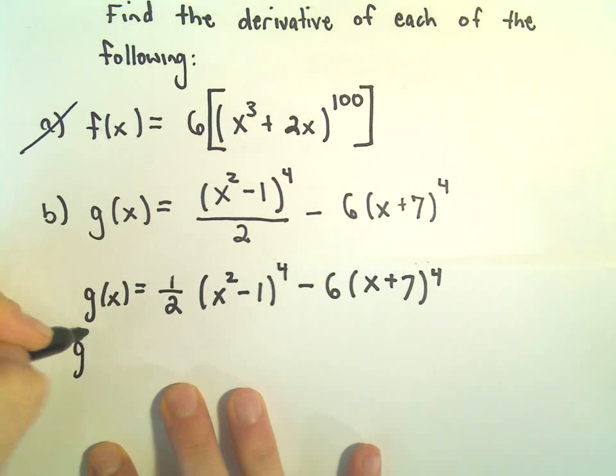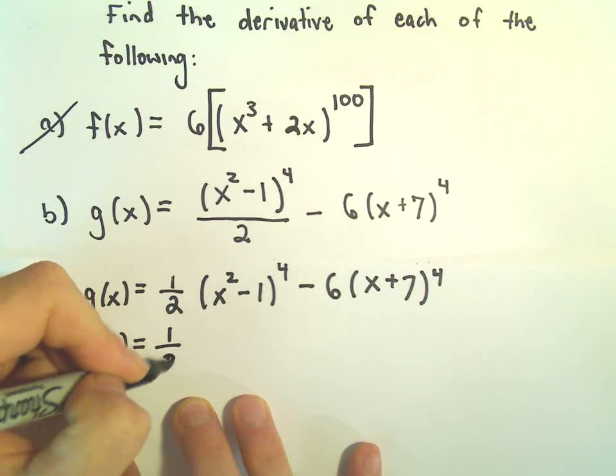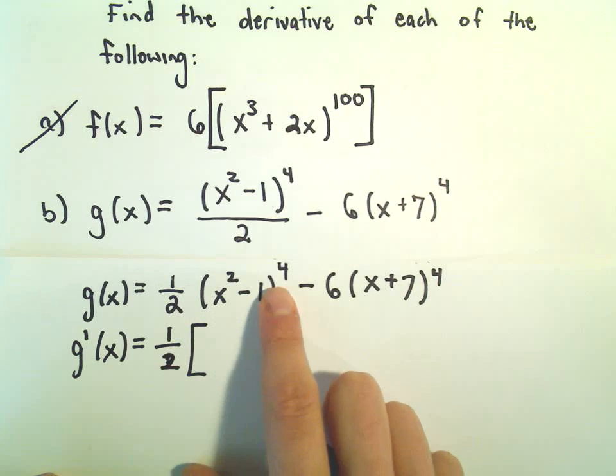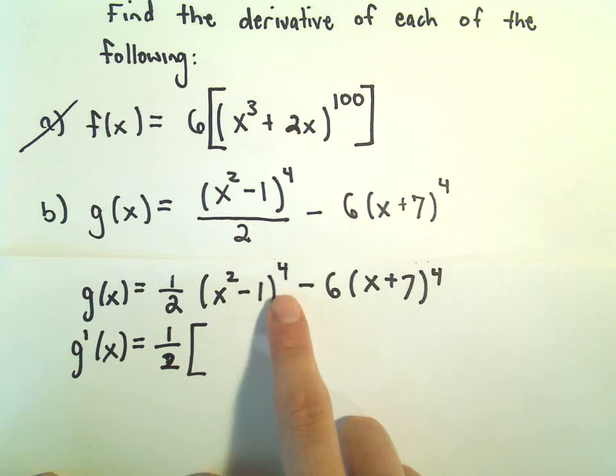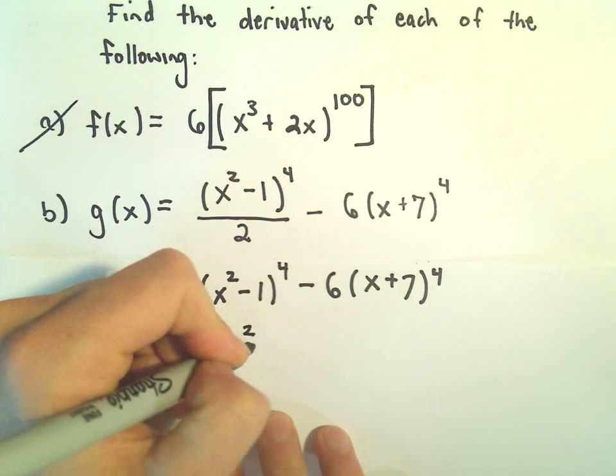And now I'm going to take the derivative. So g prime of x, the 1 half just gets carried along. Okay, so when we do the derivative of x squared minus 1 to the 4th, it'll be like our first example. The 4 will come out front, we'll leave all the stuff on the inside alone.